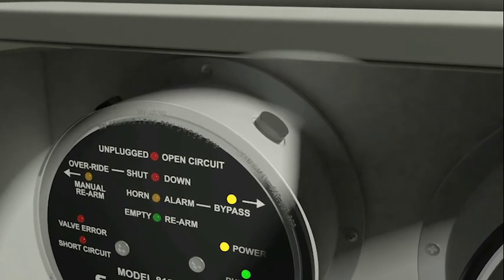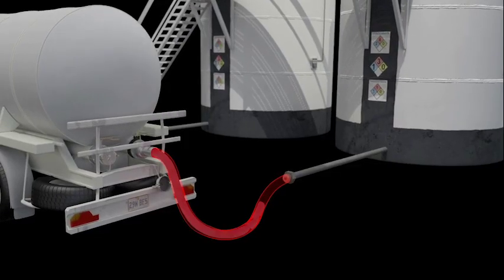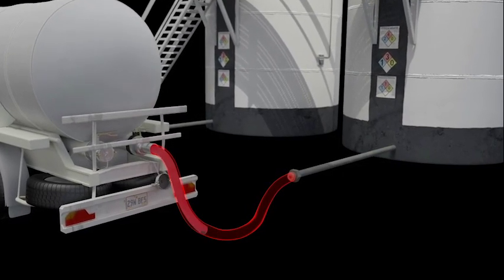Depressing the bypass button will engage the pump and silence the warning horn, allowing the operator to clean out the hoses and prepare to leave the site.